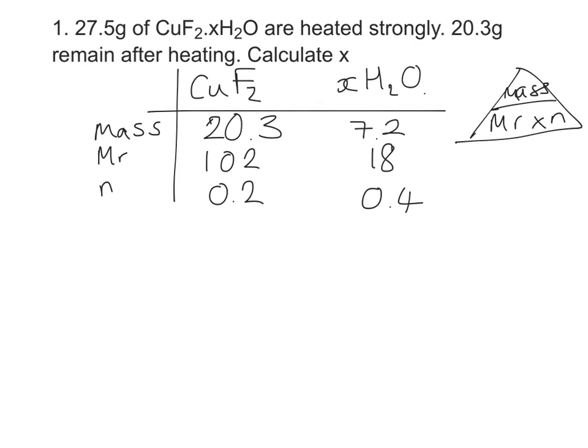Right, at this point you need a ratio, so what you need to do is divide by the smallest number, which as you can see is 0.2, and divide both sides by 0.2 to get 1 to 2. So as a ratio we have twice as much water to copper fluoride, so x in this case equals 2.